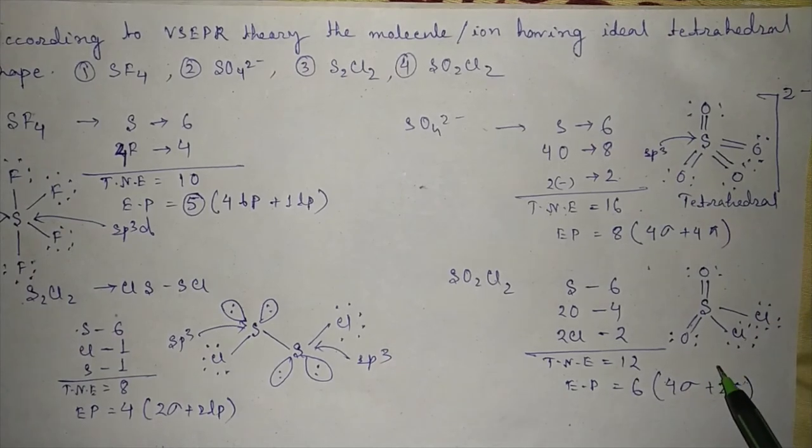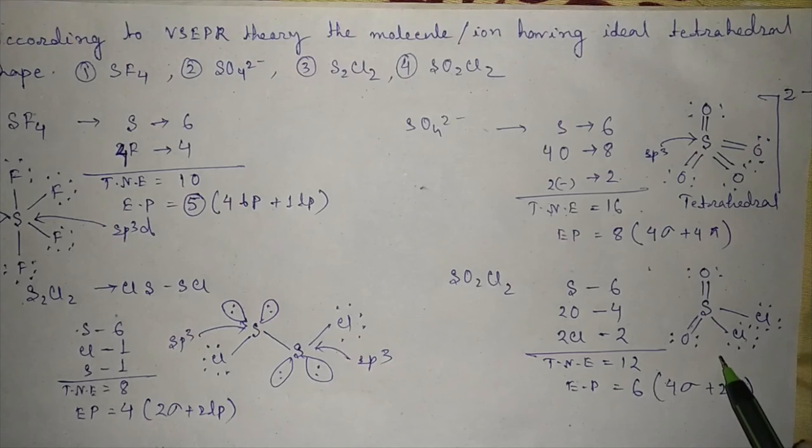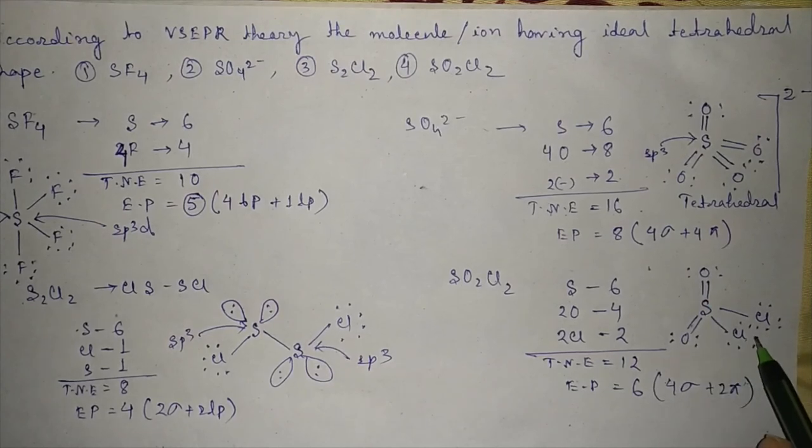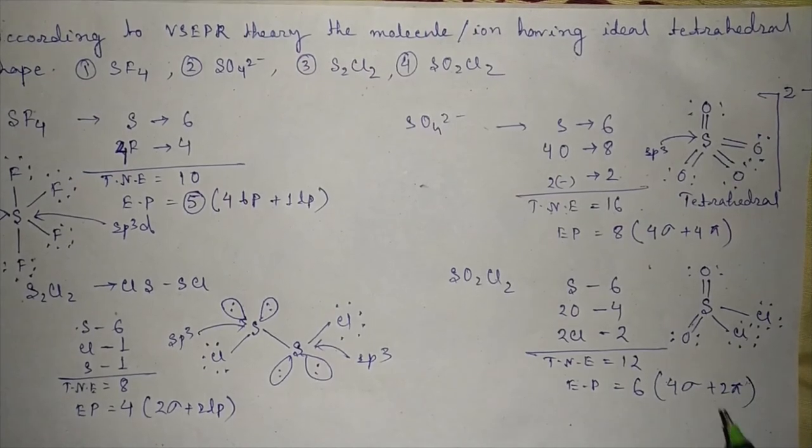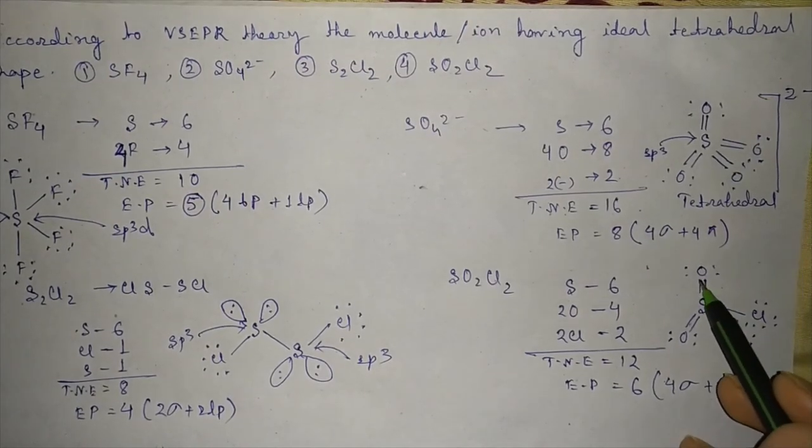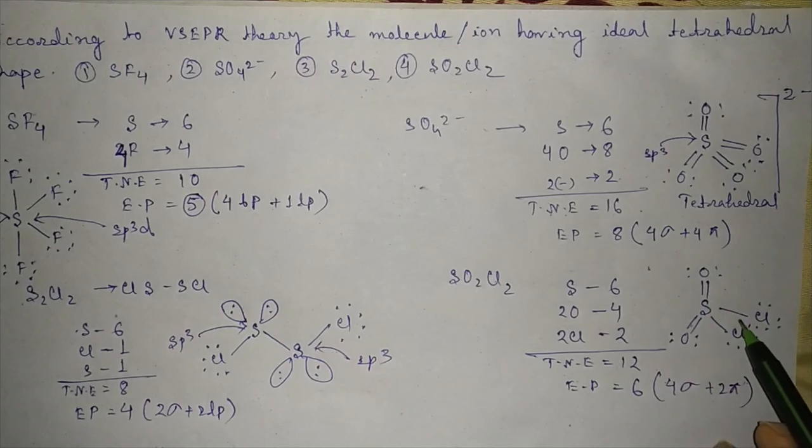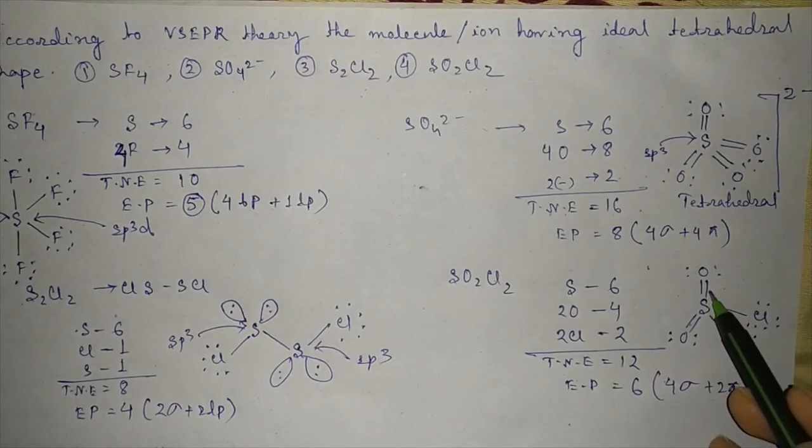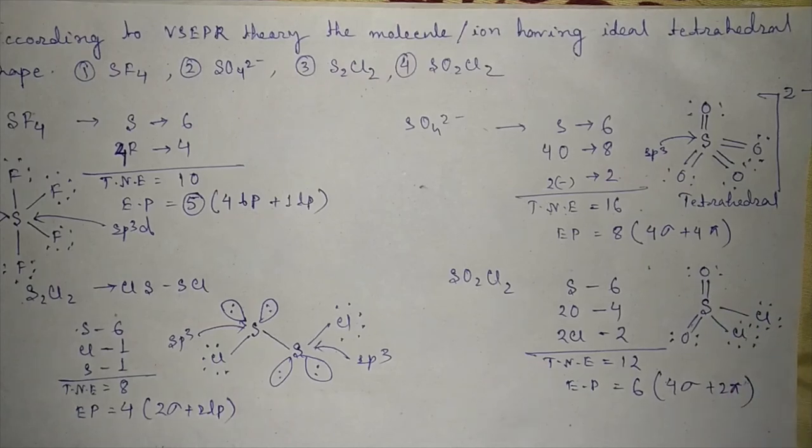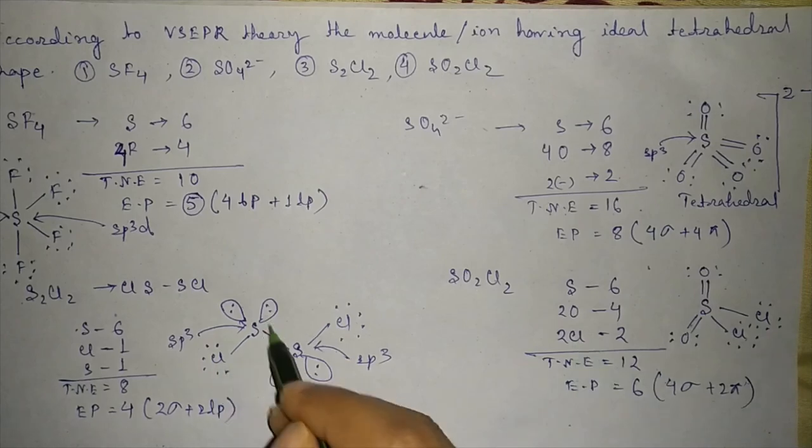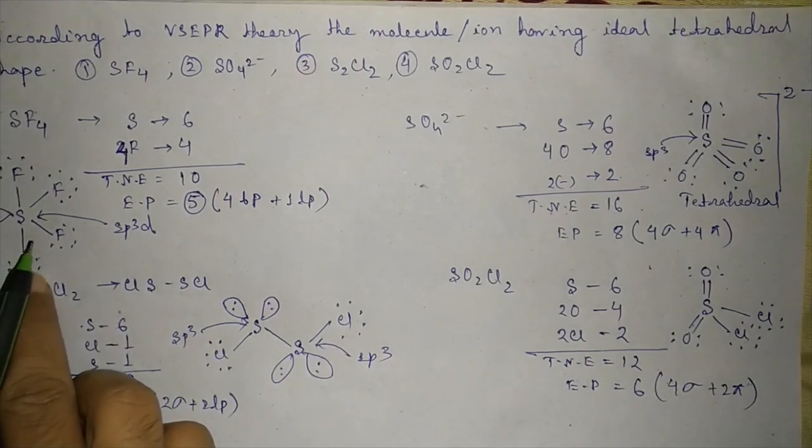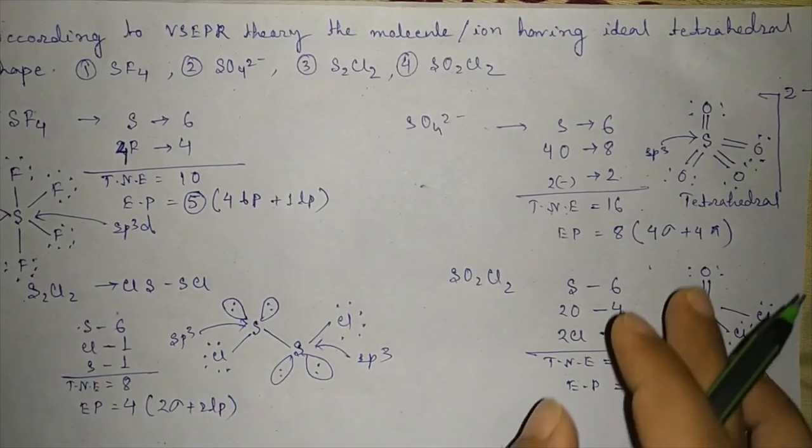Because SO2Cl2 will not have ideal tetrahedral geometry as it has different atoms with different electronegativity, so geometry will not be ideal. And it will have pi bonds and sigma bonds, so double bonds have lesser bond length, so it will not be ideal tetrahedral. S2Cl2 is not tetrahedral. SF4 is not tetrahedral. So the answer is SO4^2-.